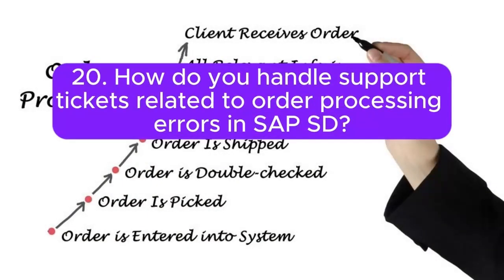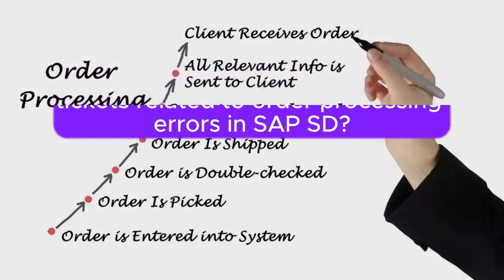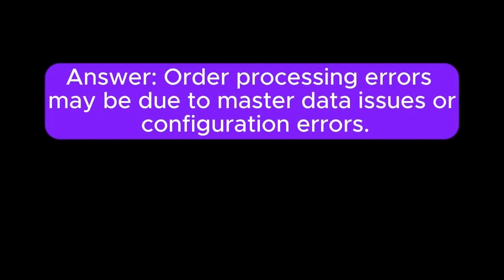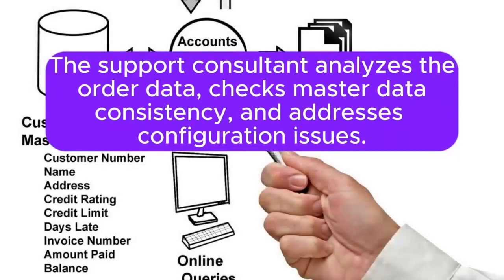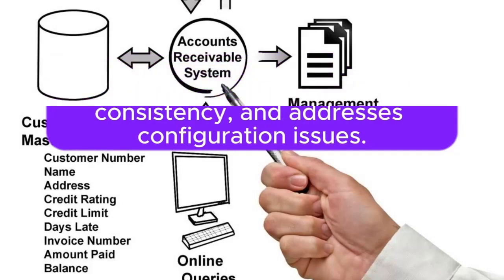Question 20: How do you handle support tickets related to order processing errors in SAP SD? Answer: Order processing errors may be due to master data issues or configuration errors. The support consultant analyzes the order data, checks master data consistency, and addresses configuration issues.